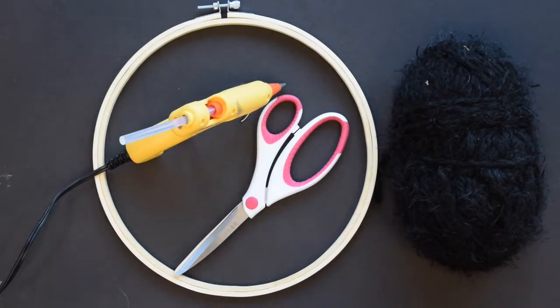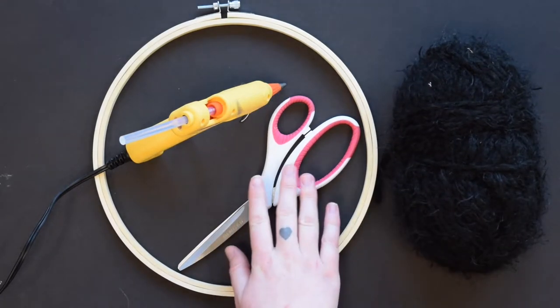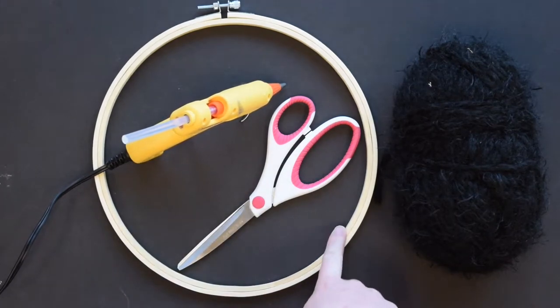For this craft we'll need a ball of black yarn, some fabric scissors, a hot glue gun, and an embroidery hoop.